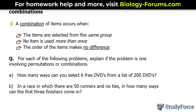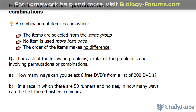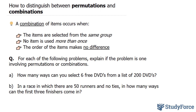There's a subtle difference between combinations and permutations. In fact, a combination of items occurs when the items are selected from the same group — the same case as permutations — and no item is used more than once, also the same. Here's the difference: the order of the items makes no difference in a combination, whereas in a permutation, the order does make a difference.